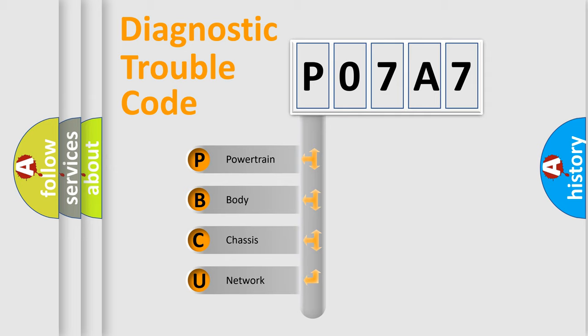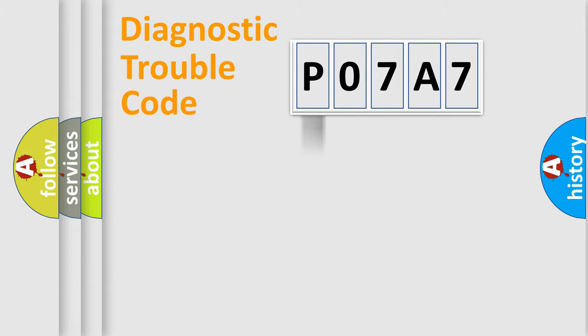We divide the electric system of automobile into the four basic units: Powertrain, Body, Chassis, Network. This distribution is defined in the first character code.